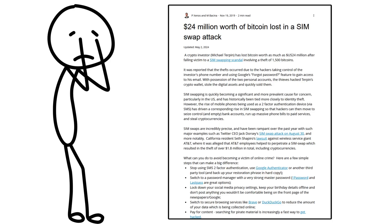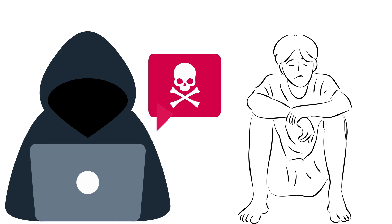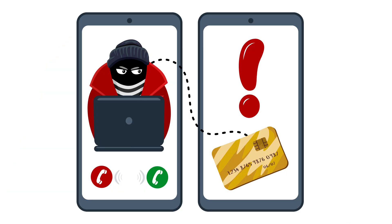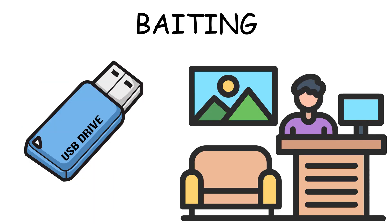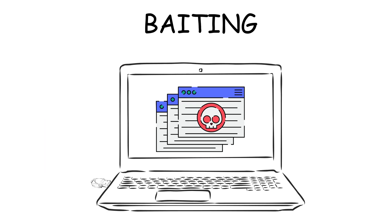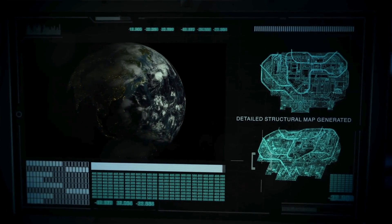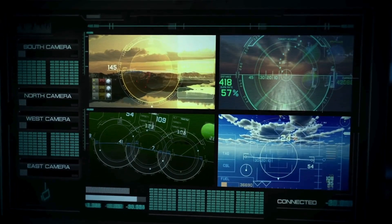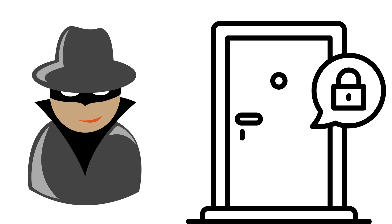Method 8: Social Engineering. Hackers hack humans, not just computers. Pretexting: 'I'm IT support, I need your password to fix the server.' Baiting: a free USB drive in the lobby — plug it in and malware installs. Quid pro quo: 'I'll give you $100 for answering this survey' — stealing your data. It works by exploiting trust, urgency, and fear. 90% of breaches start with social engineering.